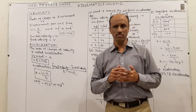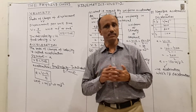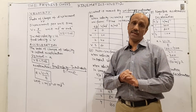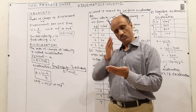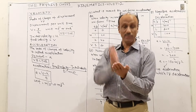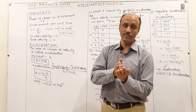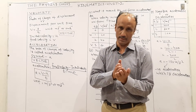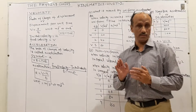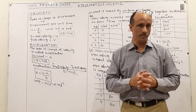For example, if you are riding a car at 80 km/h with constant velocity, meaning you are traveling in a straight line at the same speed, then whenever velocity is constant, the acceleration will be zero.